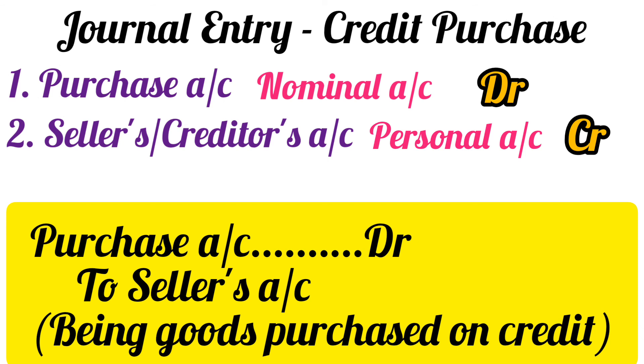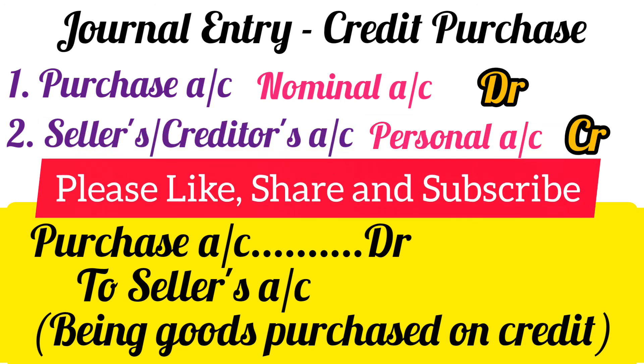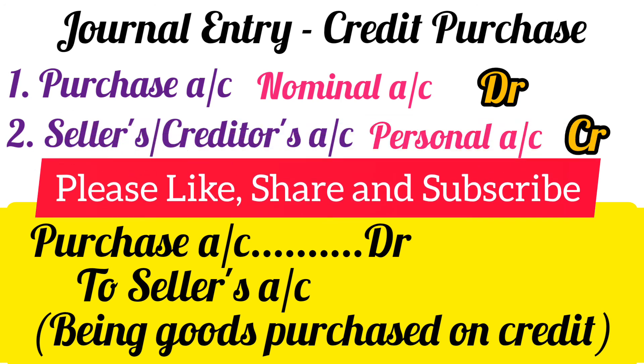So the final journal entry will be: Purchase Account debited to Seller's Account (or Creditor's Account). The narration will be: being goods purchased on credit from Mr. X.